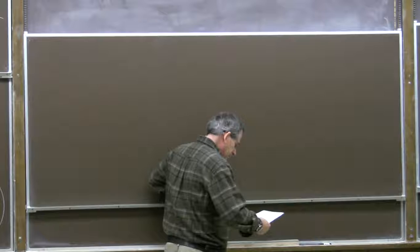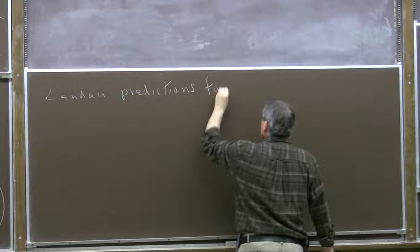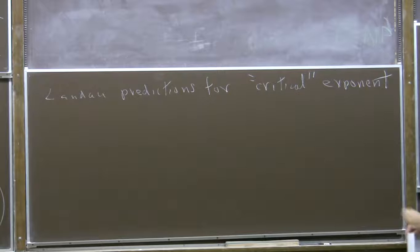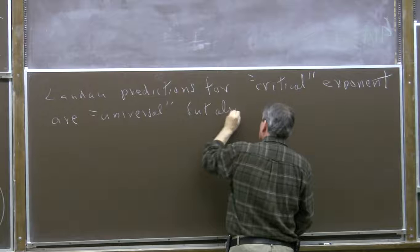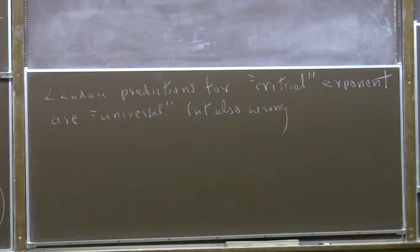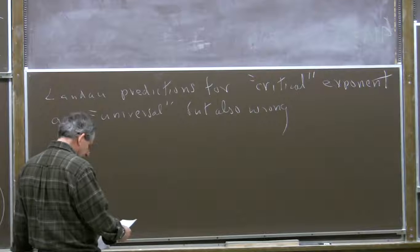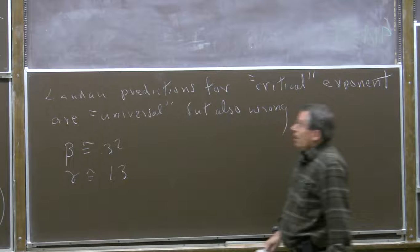It's great to have universal predictions, but these predictions for the critical exponents are also wrong. The exponents really are universal, but beta, instead of being one-half, in practice is something like a third — about 0.32 — and gamma is something like 1.3. Universality is a great idea, but there's something wrong with our predictions.